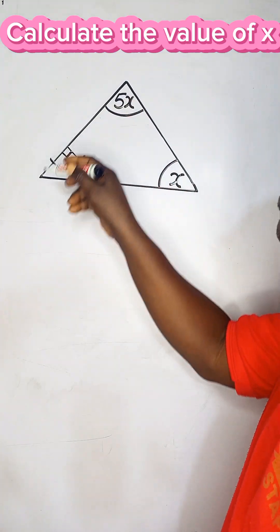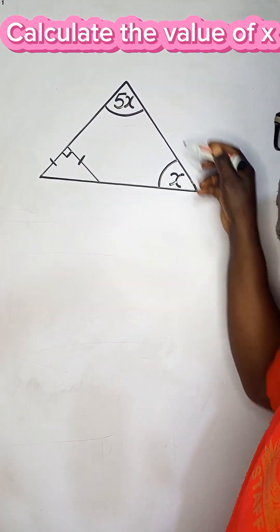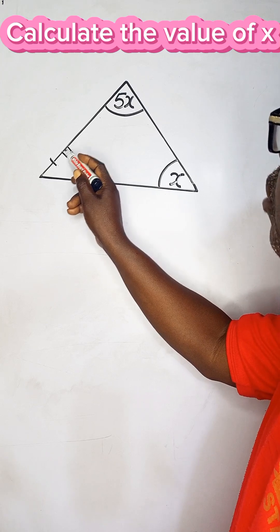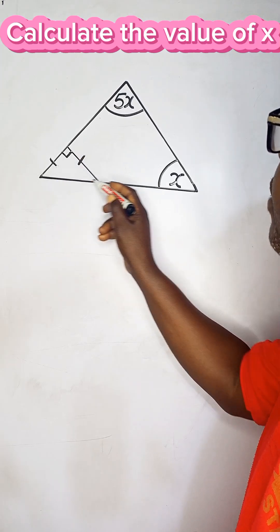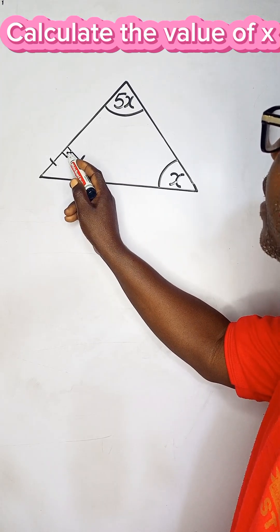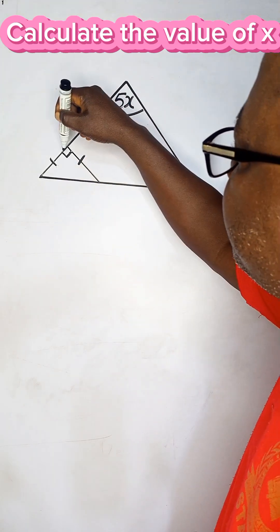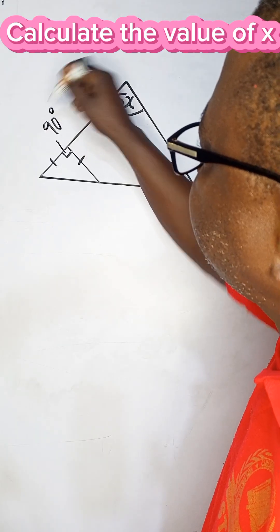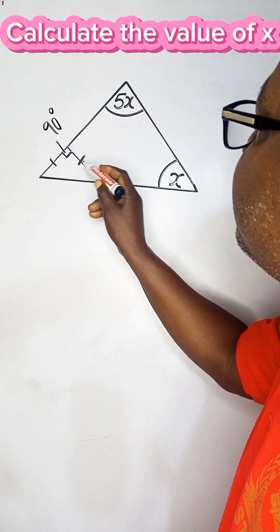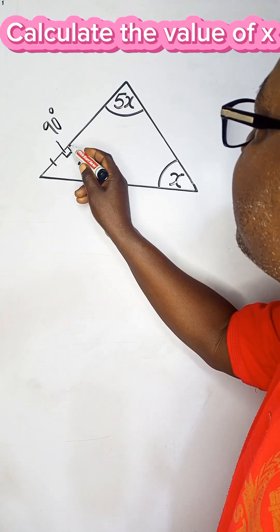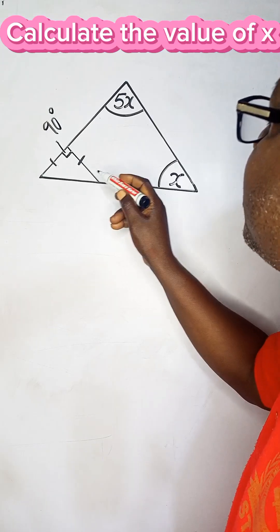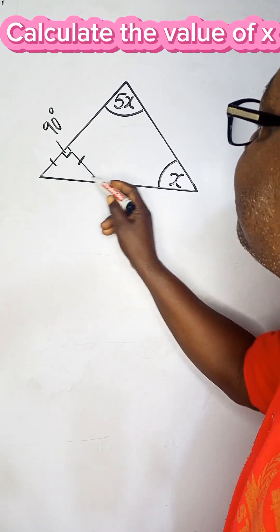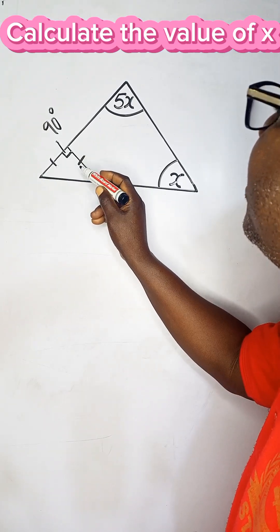In this question we have a triangle and inside this triangle we have a smaller triangle, which is a right angle triangle — this angle is 90 degrees. We can see marks indicating that this side is equal to this side, meaning that this smaller inscribed triangle is an isosceles triangle.